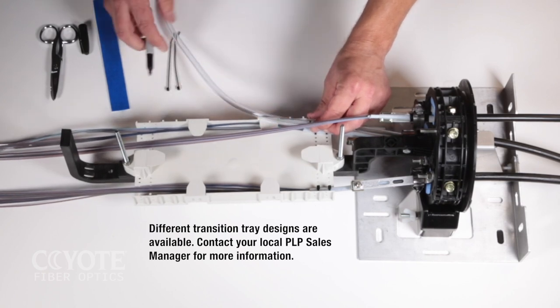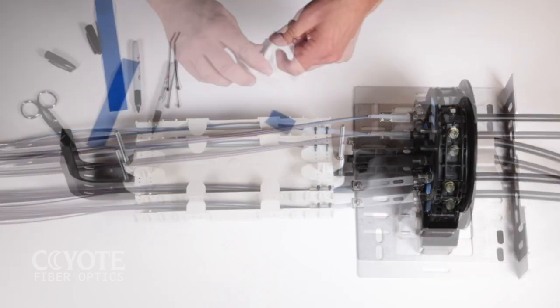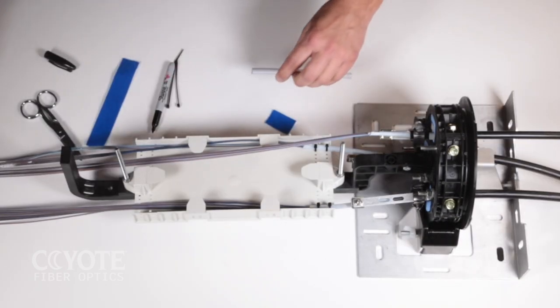Mark and cut the transition tube to length. Clean the end of the transition tube with alcohol.